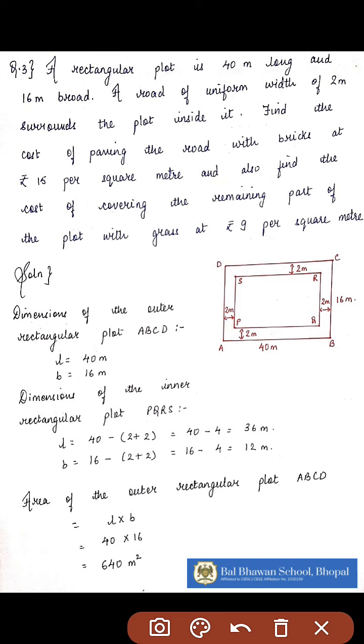A road of uniform width of 2 meters surrounds the plot inside it. You have to find the cost of paving the road with bricks at rupees 15 per square meter, and also find the cost of covering the remaining part of the plot with grass at rupees 9 per square meter.